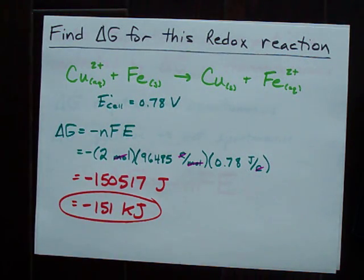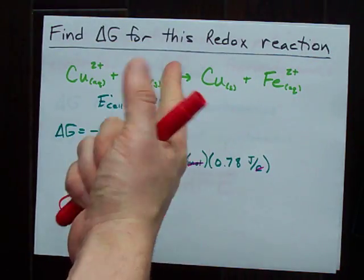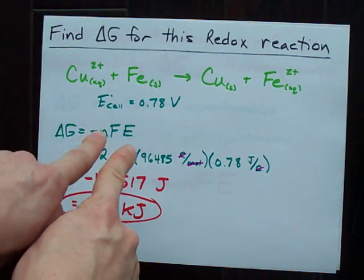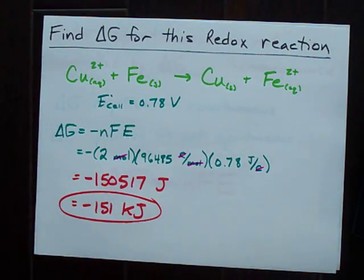That is delta G for this reaction. And again, note, because delta G is negative, it's a spontaneous reaction as it's written here. Delta G and E cell are related by this equation. Know it. Best of luck.